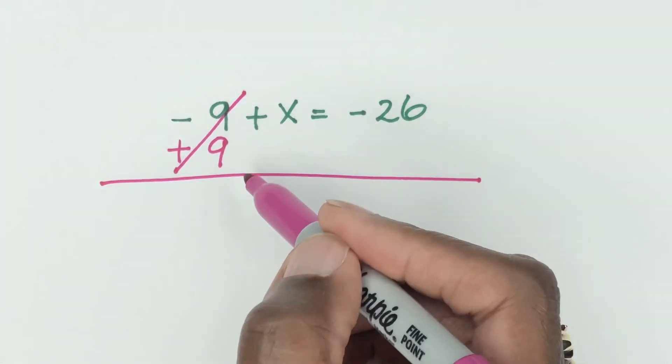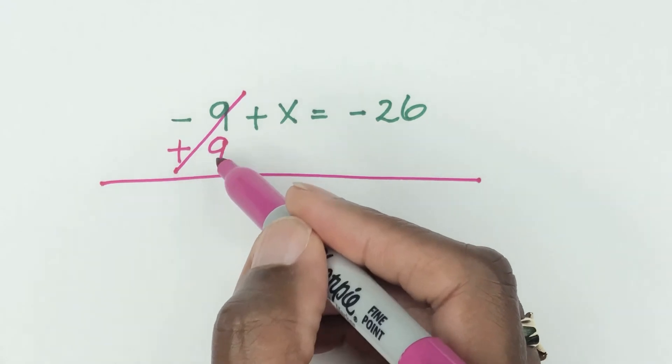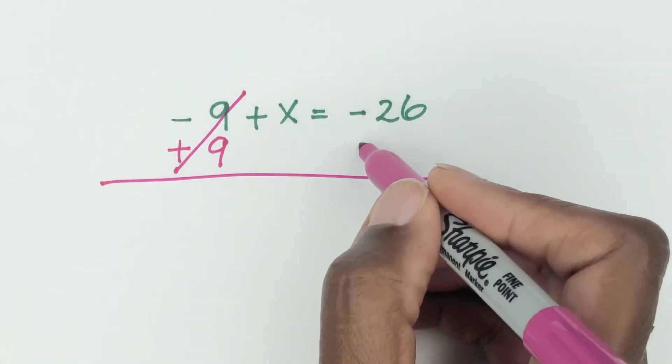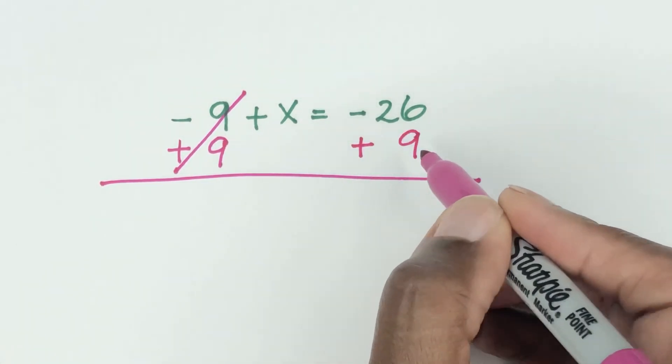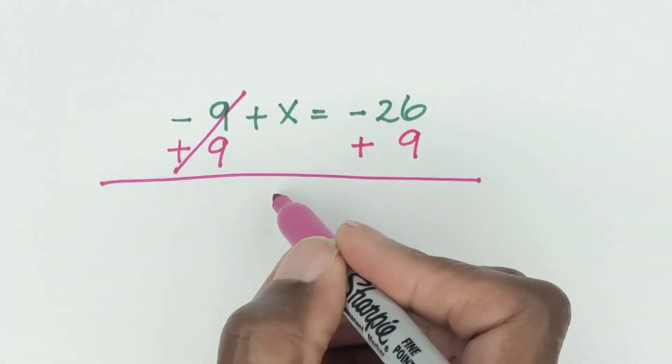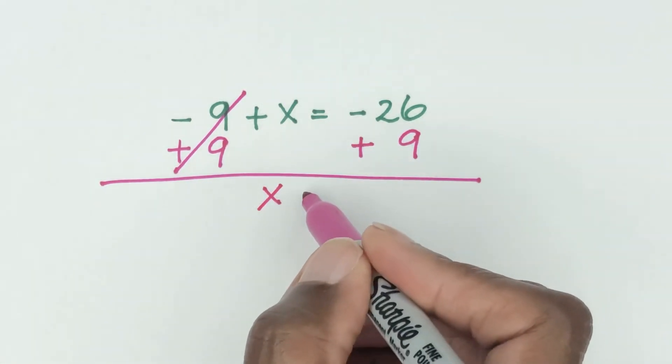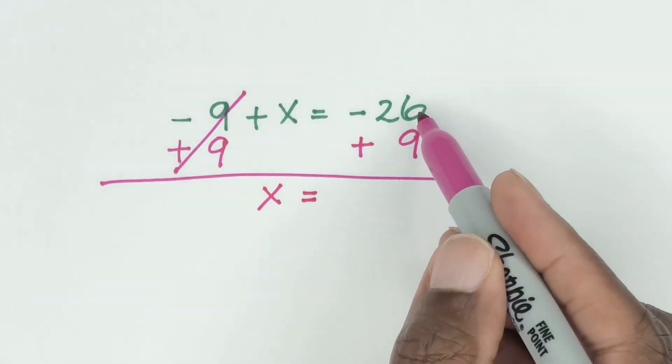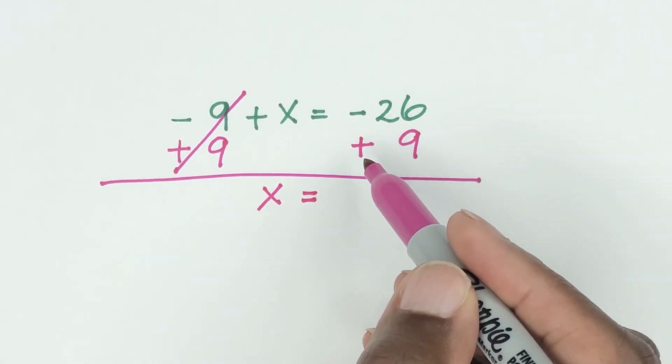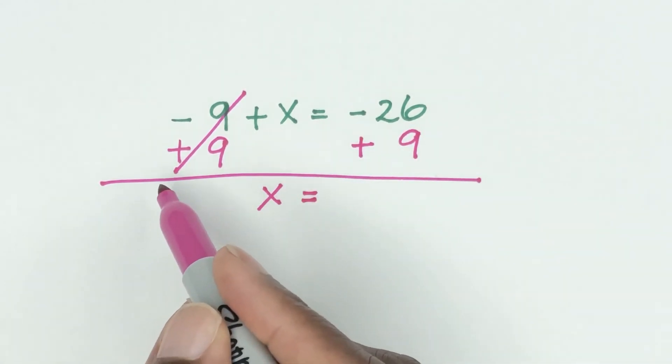And then what you do, you must also repeat what you do on one side of the equal sign you must do on the other side. So plus 9 also goes here. So the X remains and then we'll see that X equals, what is minus 26 plus 9?